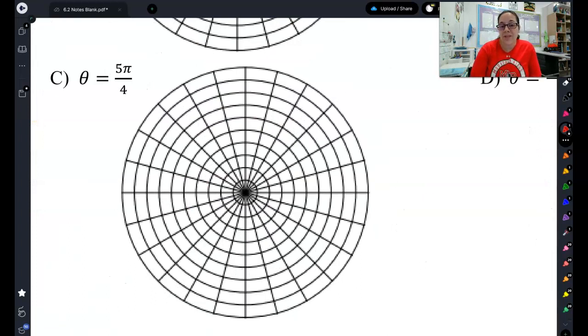Now let's try one when it's just theta equals. So I want to go to theta equals 5 pi fourths. So let's start there. If I figure out where 5 pi fourths is, I've got 1 pi fourths, 2 pi fourths, 3, 4, 5 pi fourths is going to be right there. So there is theta equals 5 pi fourths.